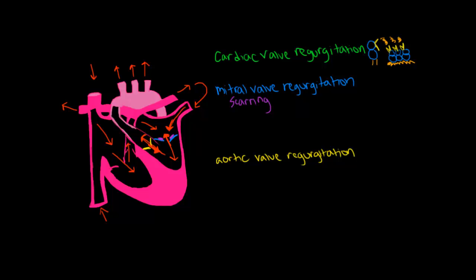The mitral valve is a valve composed of two leaflets, just like I had drawn in the picture. Normally, when the blood enters the heart from the lungs, this mitral valve is closed. But as the blood accumulates, eventually the pressure of this blood causes your mitral valve to open, and the blood is able to enter the left ventricle.